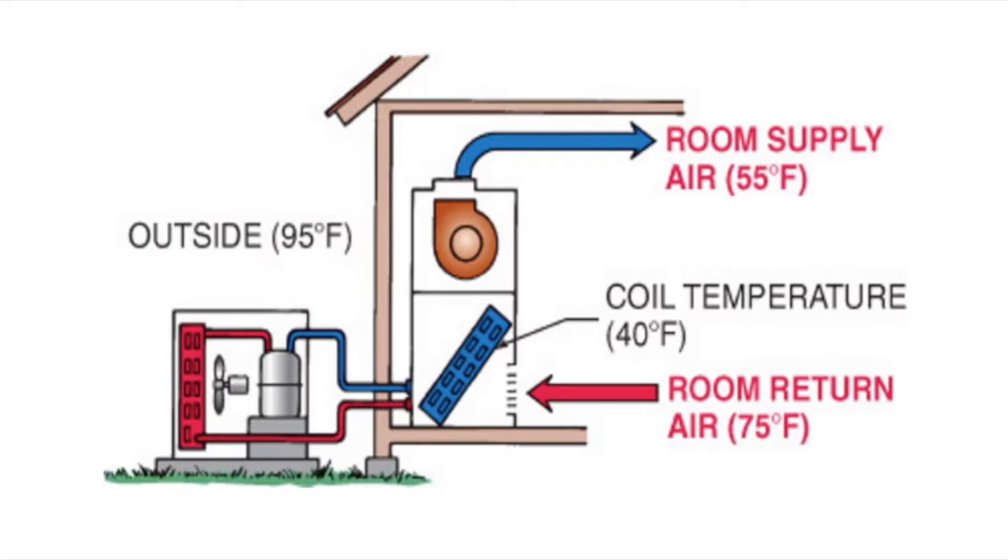There's also a blue line that goes back to the compressor. Now this evaporator, what's the temperature of the evaporator? 40 degrees. So we're absorbing the heat from that 75 degree air. We're absorbing that heat. And as the refrigerant boils, it sends that heat outside and we get rid of that heat to the 95 degree weather.